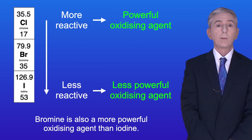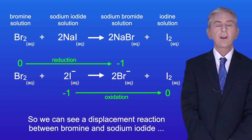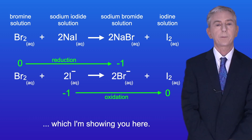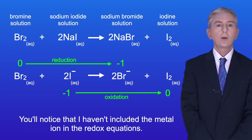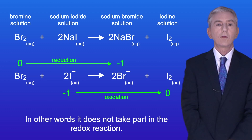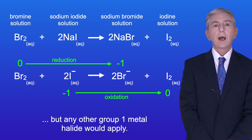Bromine is also a more powerful oxidizing agent than iodine, so we can see a displacement reaction between bromine and sodium iodide. You'll notice that I haven't included the metal ion in the redox equations - that's because the metal ion is a spectator ion and does not take part in the redox reaction. I've used sodium halides in the examples but any other group one metal halide would apply.